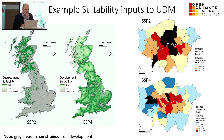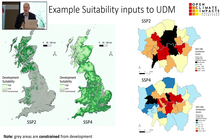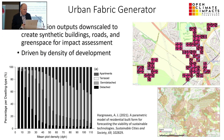Looking at London specifically, you have a demand for population in each London borough. What emerges is that in SSP2, there's very little land available, so you have to have very high densities to accommodate the people that the SSP scenario suggests will be there, compared to SSP4. So you get very different outcomes.